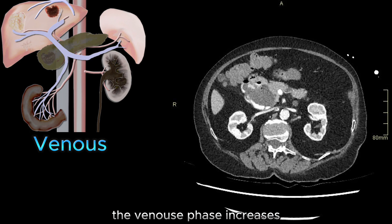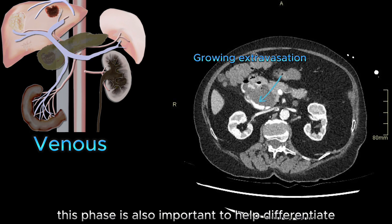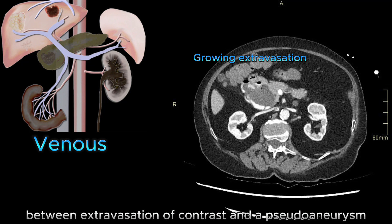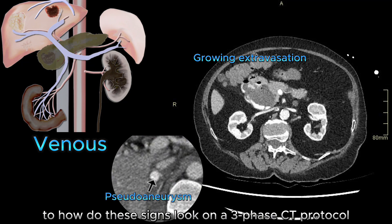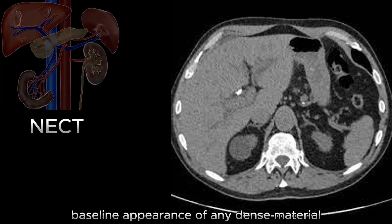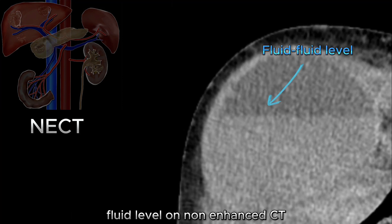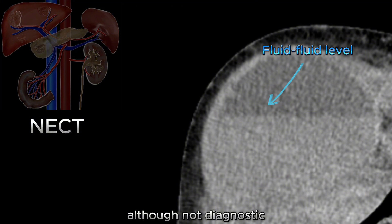The venous phase increases the sensitivity to pick up subtle bleeds. This phase is also important to help differentiate between extravasation of contrast and a pseudoaneurysm. As previously mentioned, the non-enhanced CT is mainly helpful to get a baseline appearance of any dense material, but a fluid-fluid level on non-enhanced CT is one clue to active bleed, although not diagnostic.